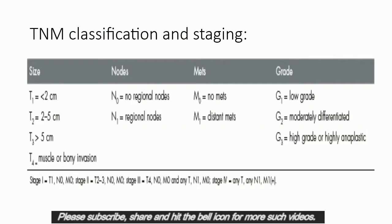TNM classification and staging of SCC of skin: Size is T1 when less than 2 cm, T2 when 2 to 5 cm, T3 when greater than 5 cm, and T4 when there is muscle or bony invasion. N0 when no regional nodes are involved and N1 when regional nodes are involved. M0 when there is no metastasis and M1 when there is distant metastasis. Grade 1 is low-grade cancer, Grade 2 is moderately differentiated cancer, and Grade 3 is high-grade or highly anaplastic cancer. Stage 1 is T1N0M0, Stage 2 is T2 or T3N0M0, Stage 3 is T4N0M0 or any T, N1, M0, and Stage 4 is any T with any N and M1.